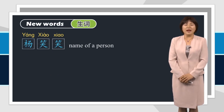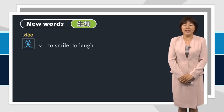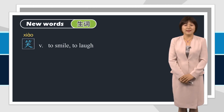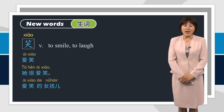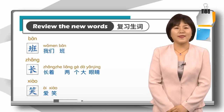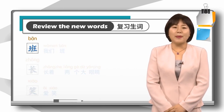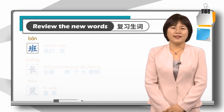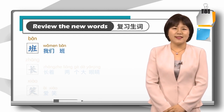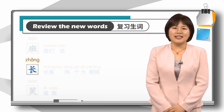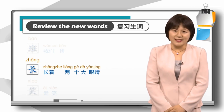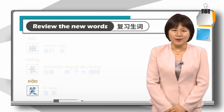We learned the Chinese name 杨笑笑 in the previous class. Do you still remember it? The character 笑 means to smile, to laugh. 跟我读：笑，爱笑，她很爱笑，爱笑的女孩。Let's review the new words in Dialogue 3: 班，长，长着两个大眼睛，笑，爱笑。